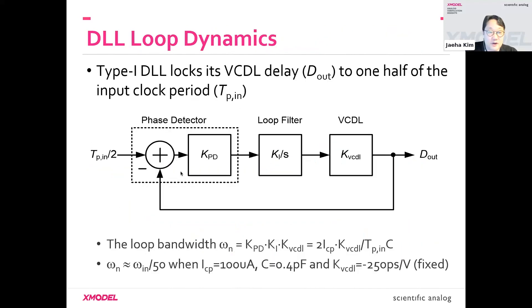If you follow this analysis, to scale the loop bandwidth proportionally to the input frequency, we want all the parameters in the DLL to be constant.